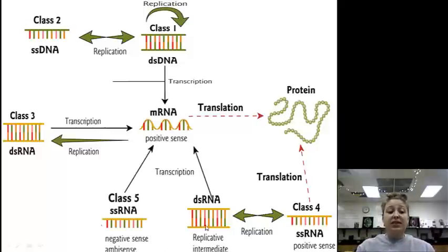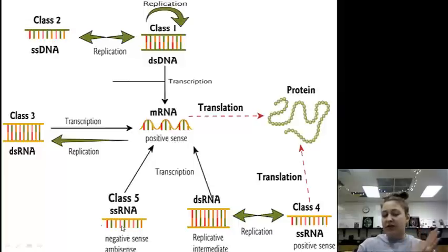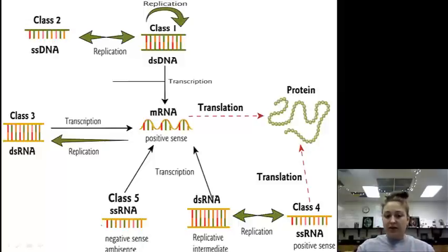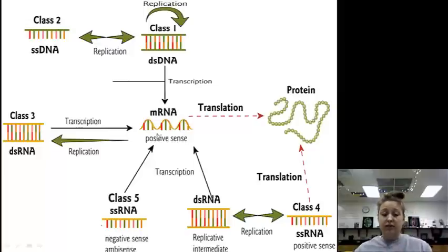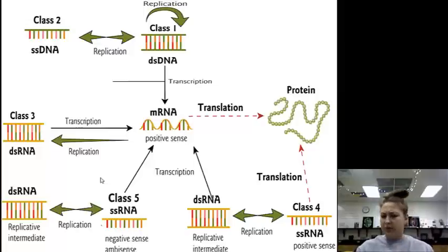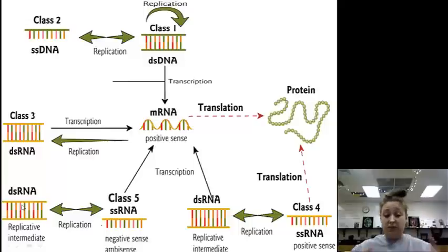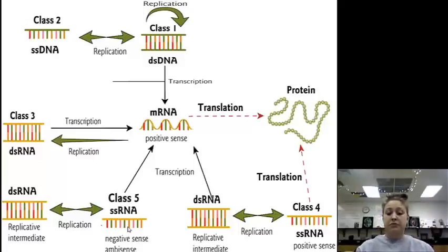Class 5 genome is single-stranded negative sense. Remember that the negative sense was used to make the positive-sense mRNA. Well, that's what's happening here — the negative-sense RNA is being transcribed to make positive-sense mRNA. How does it replicate? It goes to double-stranded RNA and then is ripped apart to go back to single-stranded negative sense.